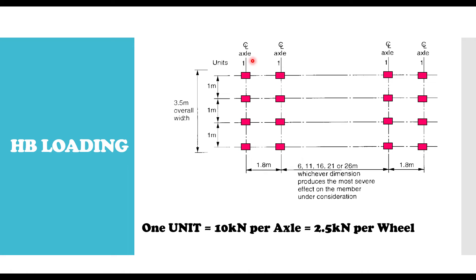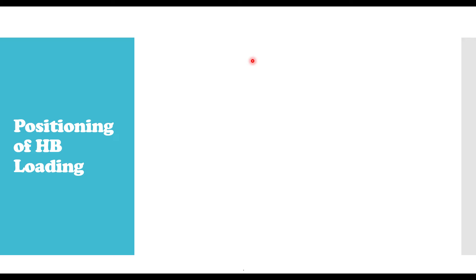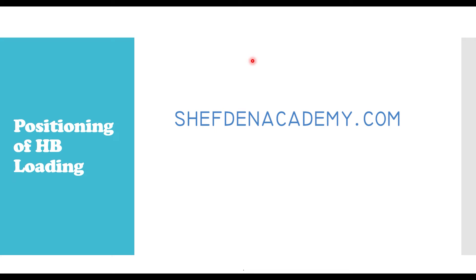So how do we position the HB loading? I mentioned there are a lot of combinations — most of the time you combine HA and HB, applying HA on some parts of the bridge and HB on other parts. It actually depends on how you want to load the bridge. If you like what I'm showing you, consider subscribing to the channel and turning on notifications. You can also check my website at chevginacademy.com, where I create a lot of content on structural design.